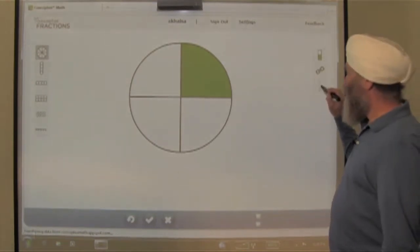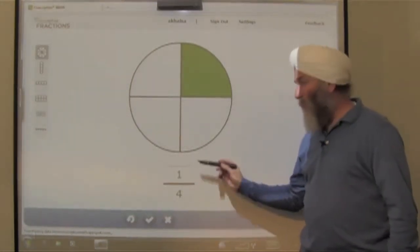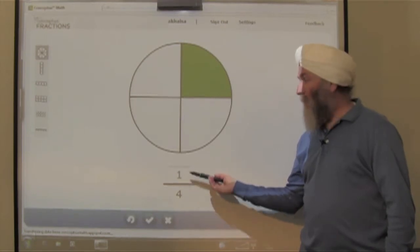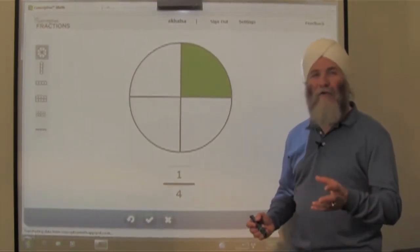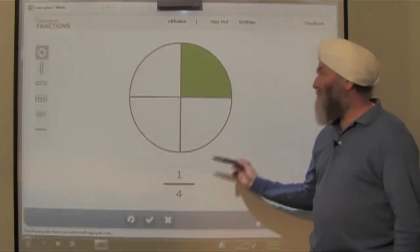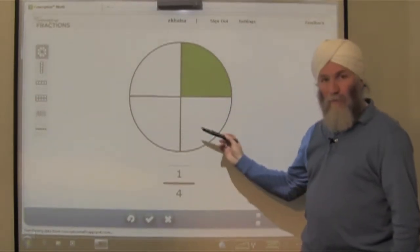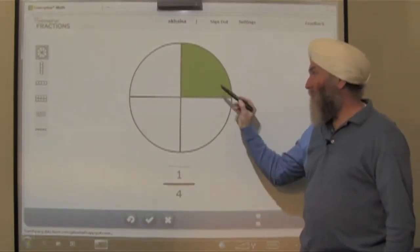Let's look at the fraction. Here's how it's written, one-fourth. Four is the denominator and one is the numerator. So what does this mean, denominator and numerator? The denominator describes the number of equal parts and the numerator describes the number of shaded parts.